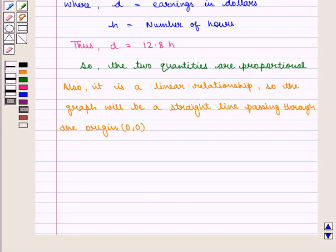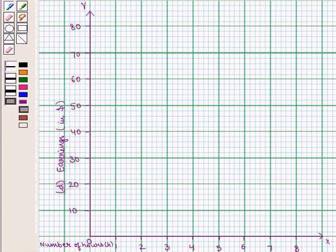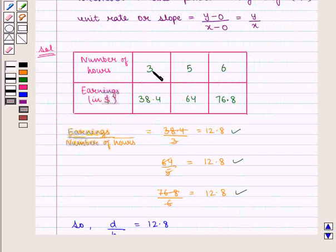And now we can make its graph. Now take number of hours along horizontal axis and earnings in dollars along vertical axis. Now we can plot these points one by one on the graph.